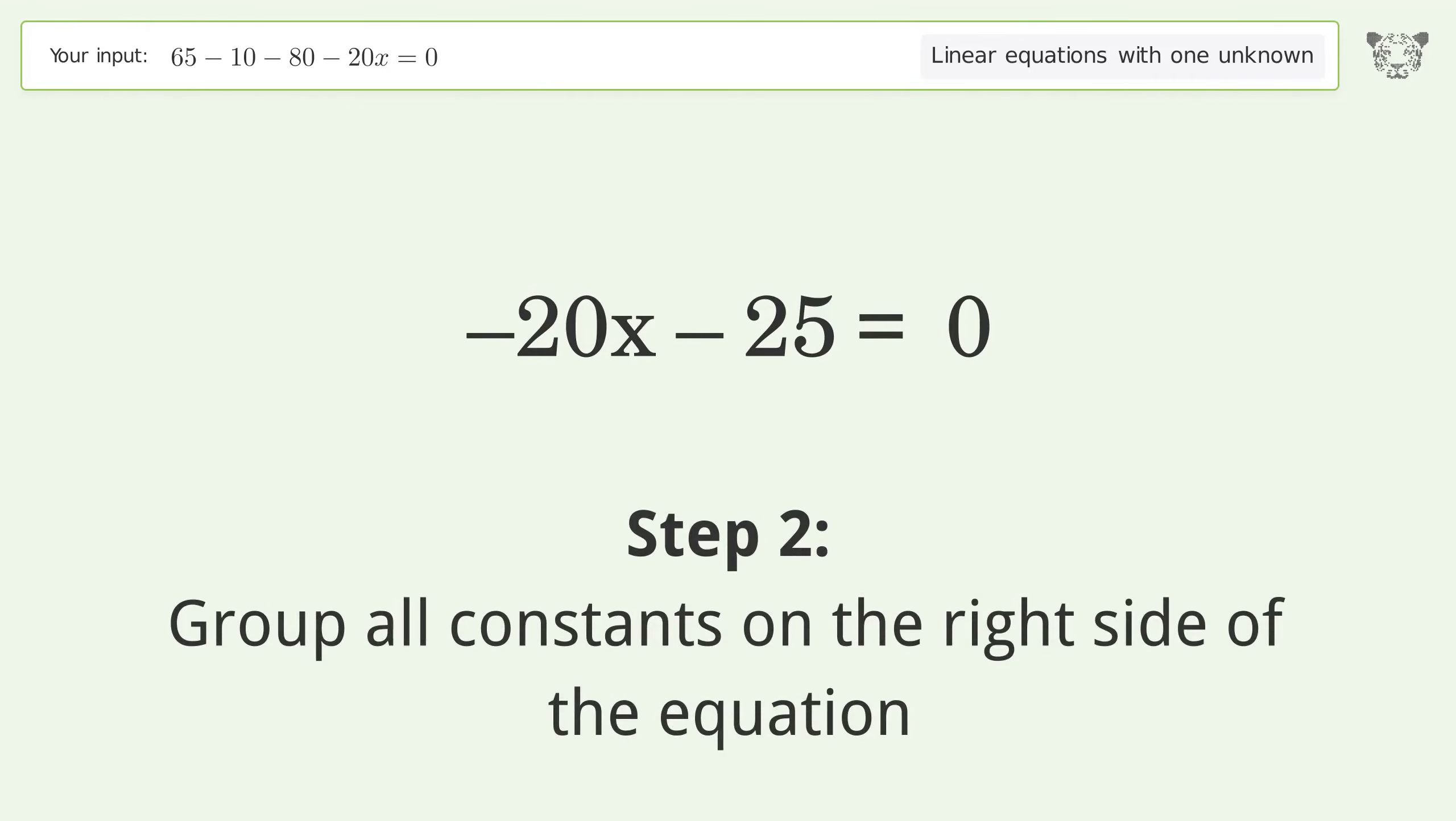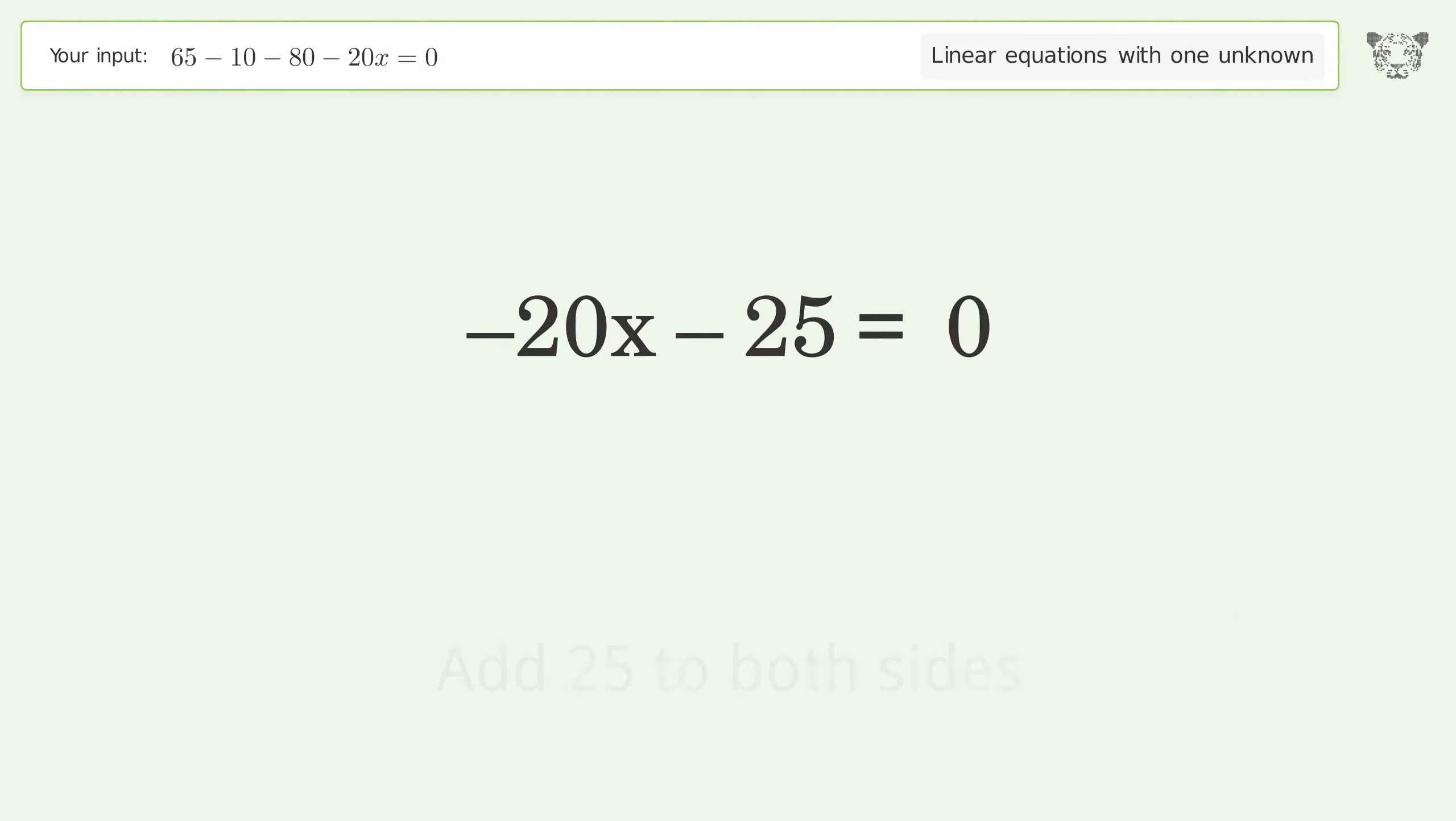Group all constants on the right side of the equation. Add 25 to both sides. Simplify the arithmetic.